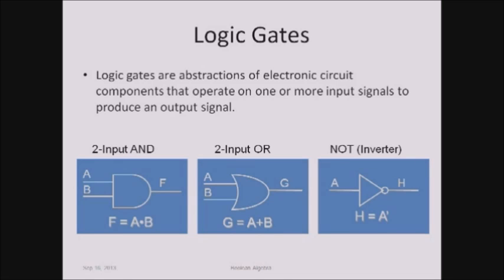Logic gates are mainly used for realizing any electronic circuit. Logic gates are abstractions of electronic circuit components that operate on one or more input signals to produce an output signal. The AND gate can accept more than one input and produces only one output; the output function expression is f = a AND b.